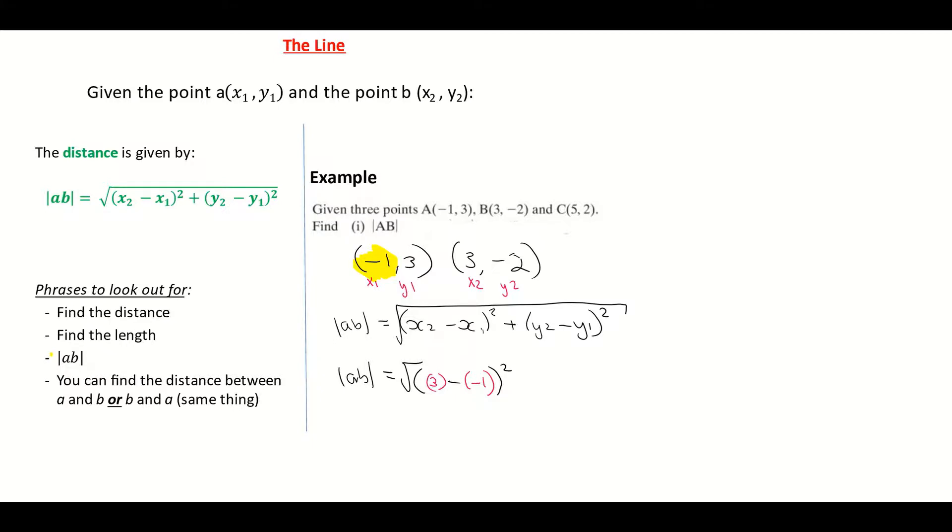I'm then bringing down this plus. So it's going to be plus bracket y₂. Again, I'm creating a new internal bracket here. y₂ is -2. I'm then subtracting. So the subtract from here now is giving me, I'm subtracting my y₁, which is I'm subtracting 3.